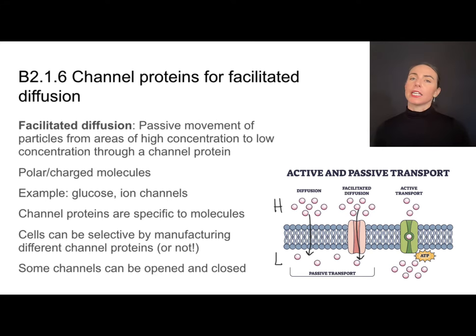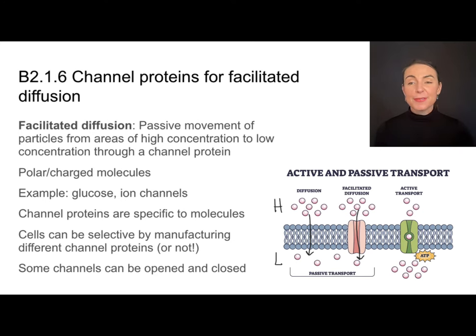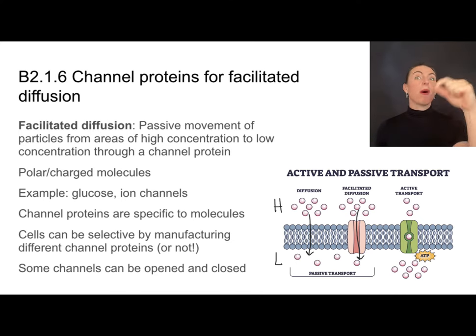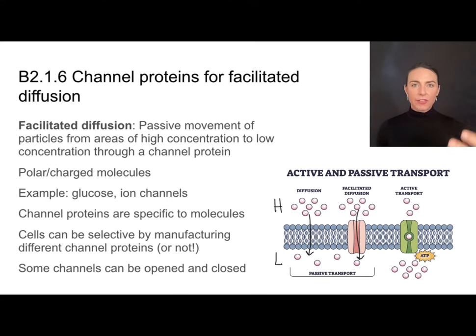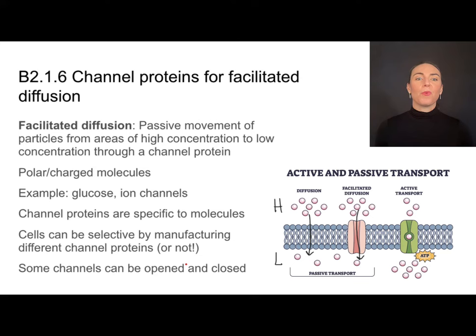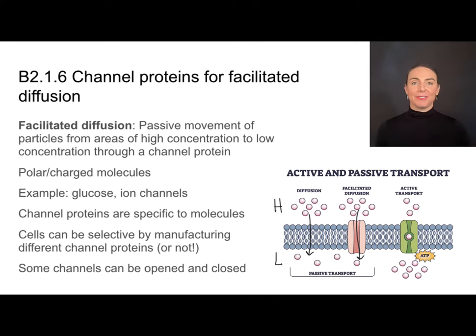Channel proteins are specific to different molecules — there are separate channels for glucose, sodium ions, potassium ions, and so on. When we say a membrane is selectively permeable, one way cells control which molecules enter or exit is by manufacturing certain channel proteins or not. A cell that wants glucose in will manufacture a glucose channel; one that doesn't, won't. Some channels can even be manufactured but open or close at different times — all relating back to this idea of form and function.